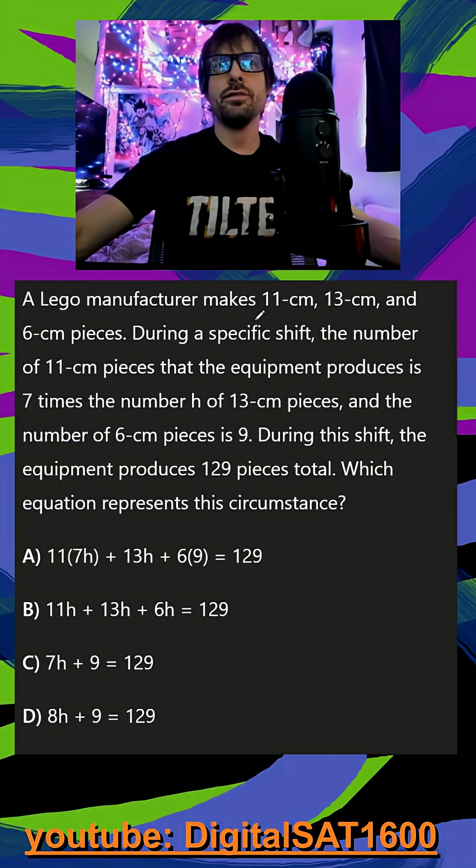A Lego manufacturer makes 11, 13, and 6 centimeter pieces. During a specific shift, the number of 11 centimeter pieces that they make is 7 times the number H of 13 centimeter pieces.